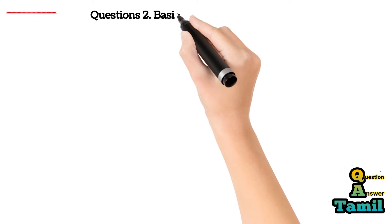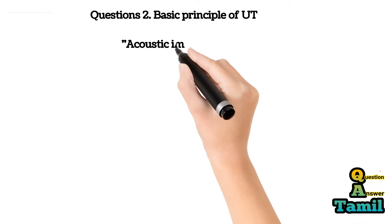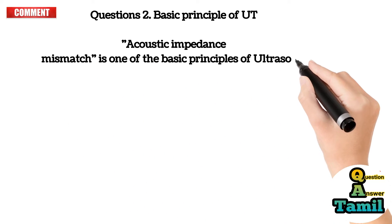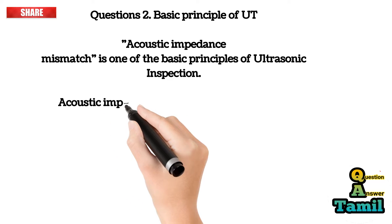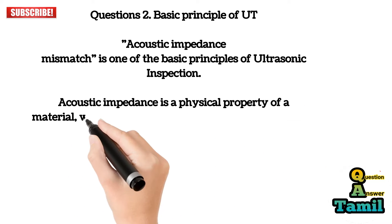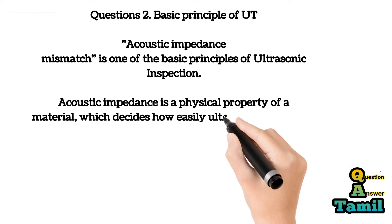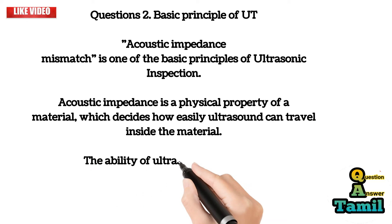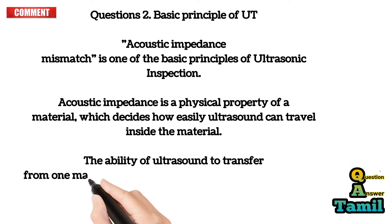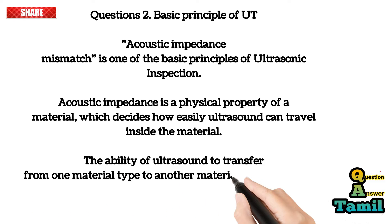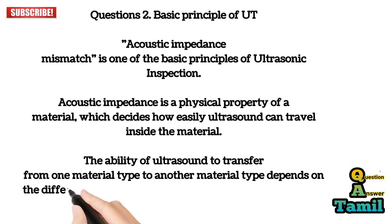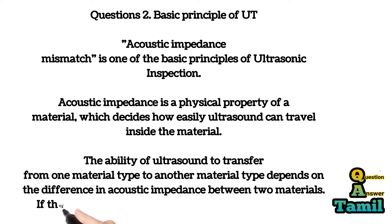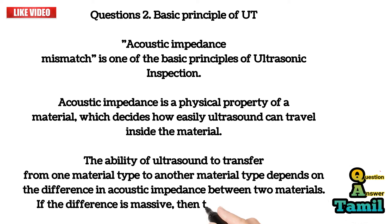Question 2: Basic principle of UT. Acoustic impedance mismatch is one of the basic principles of ultrasonic inspection. Acoustic impedance is a physical property of a material which decides how easily ultrasound can travel inside the material. The ability of ultrasound to transfer from one material type to another depends on the difference in acoustic impedance between the two materials. If the difference is massive, then the sound is reflected.